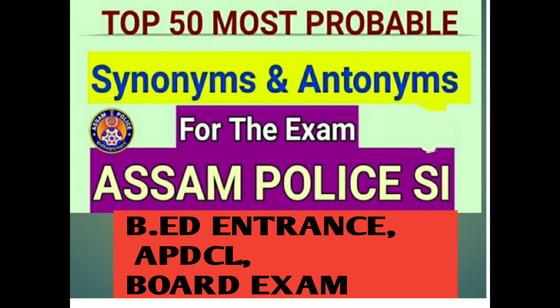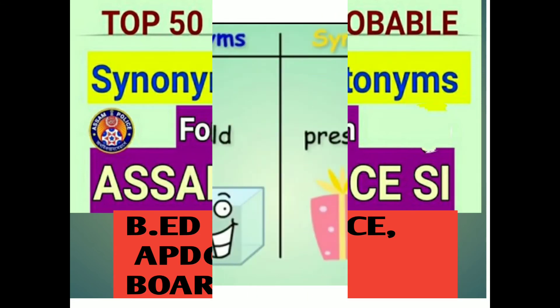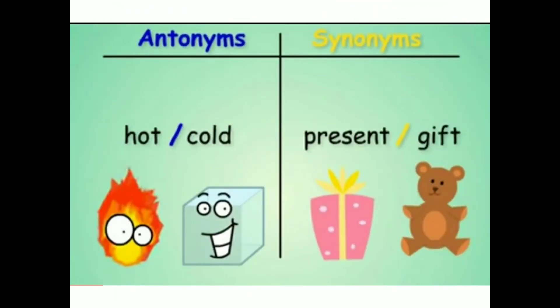In the first place, what are the meanings? Antonyms are those words which are opposite to each other — for example, the opposite of hot is cold. Synonyms are words which are similar to each other.